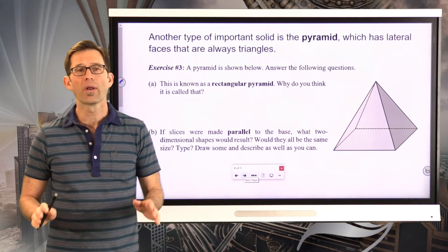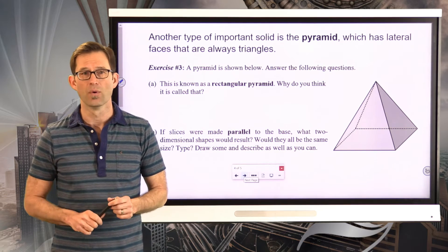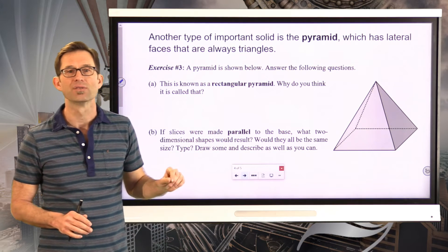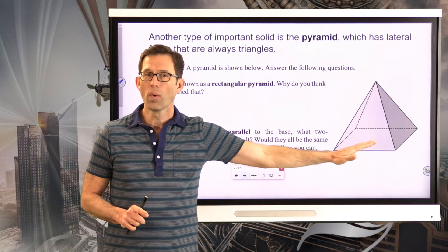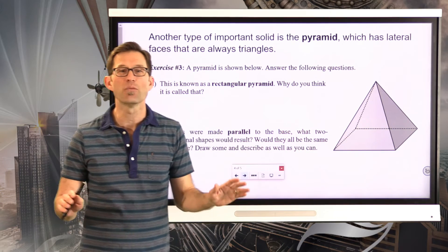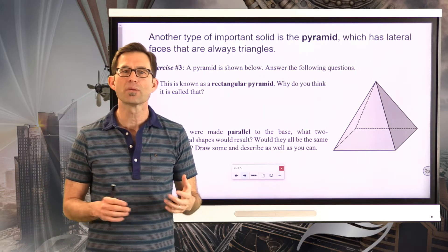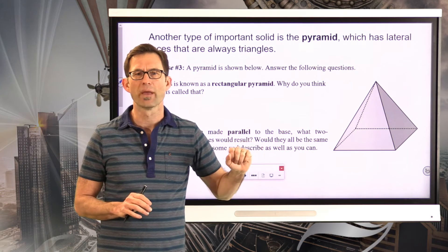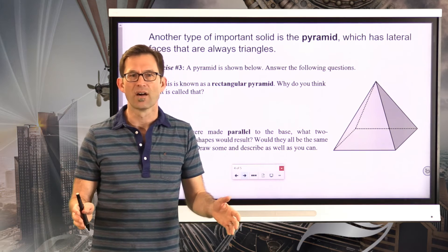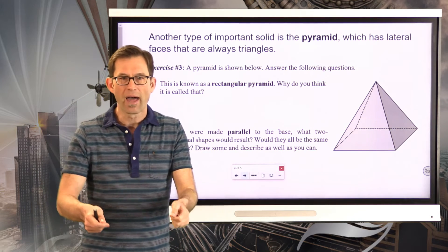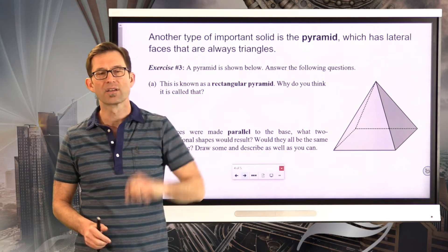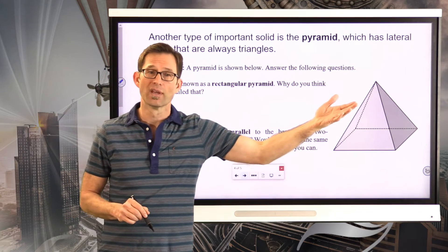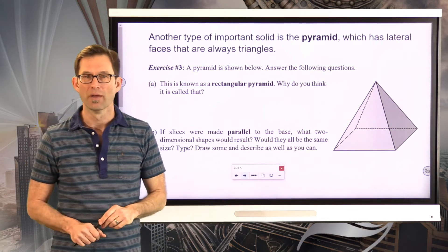Prisms are very important, but another solid we'll encounter is the pyramid. In a pyramid, all lateral faces are always triangles, and there is only one base — which can be any polygon. Pyramids are really cool. You could take an octagon, lay it flat, put a point above it, and connect every vertex of the octagon to that top point — known as the vertex of the pyramid — and you'd have a pyramid.